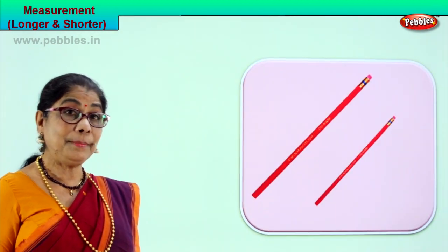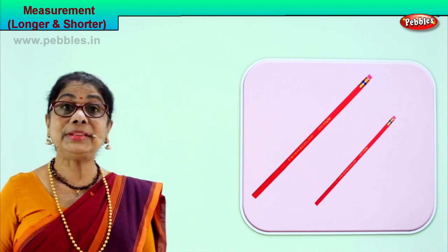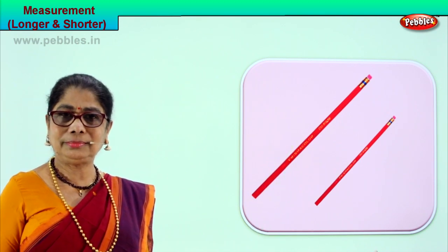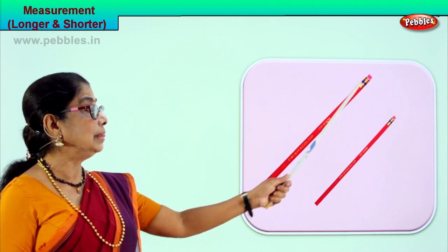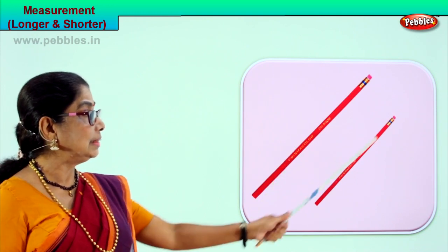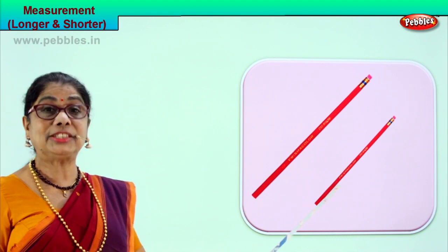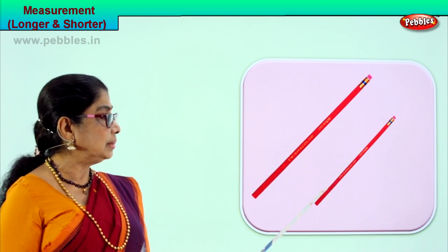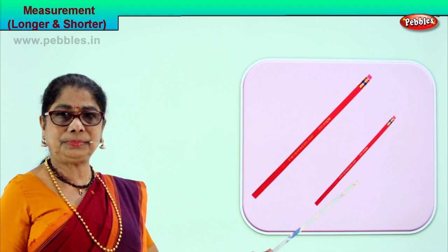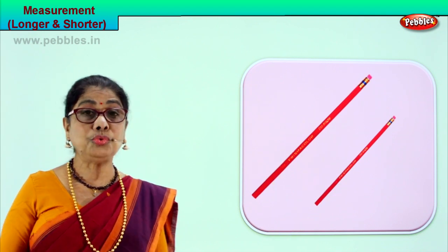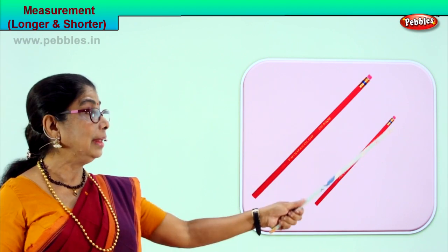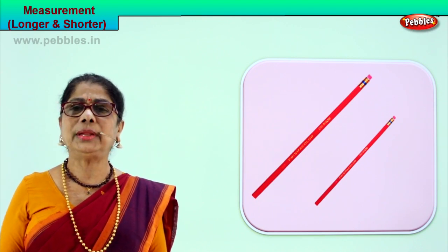We are learning measurements, comparing the length of the same type. Here you have two pencils — one is short and one is long. This pencil is longer than this pencil. Longer, shorter — we are learning comparison of two measurements, long and short. So we say this pencil is longer than this pencil.